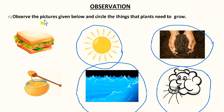We have to circle the things which a plant needs to grow. The first thing is sandwich. Does a plant need sandwich? No, a plant doesn't need sandwich. We eat sandwich, but plants don't eat, so plants do not need sandwich. We don't need to encircle it.